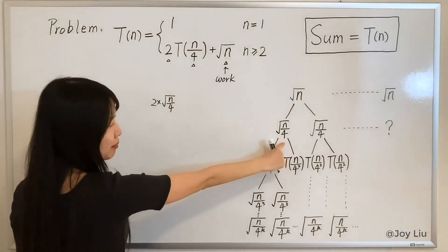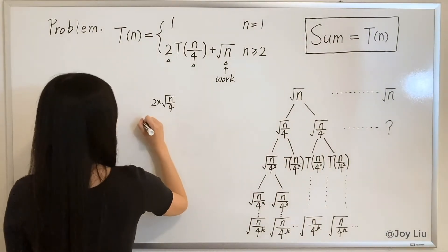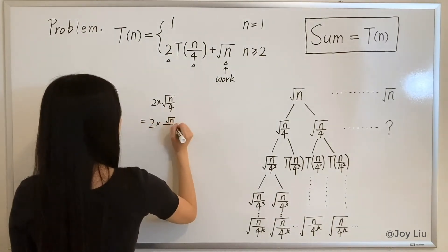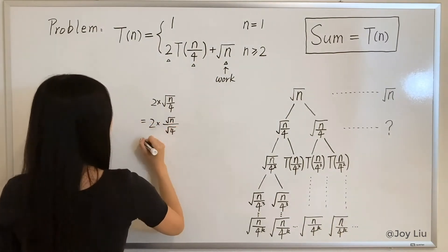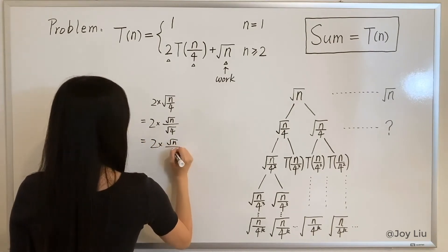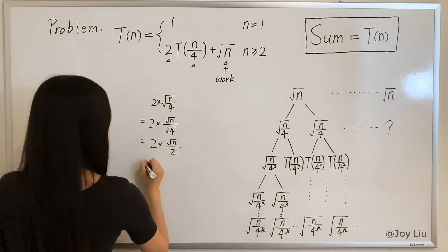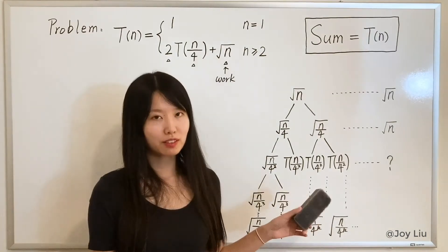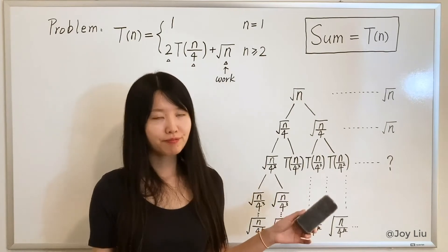Now we need to do some calculation. That's 2 times this, so that equals to 2 times square root of n over square root of 4, and that equals to 2 times square root of n over 2, so that is square root of n. It's the same. How about the third level, would it be the same or not?